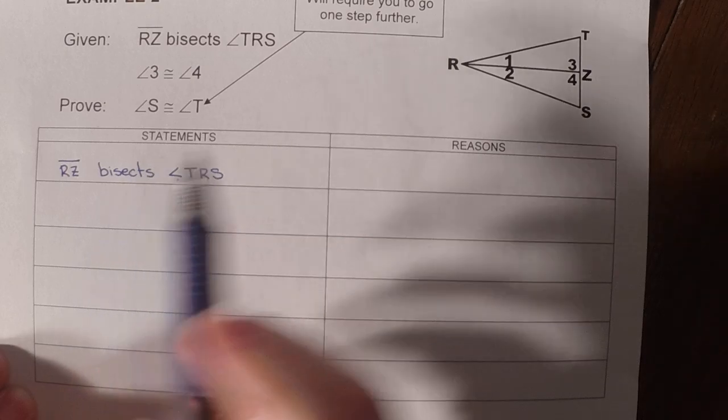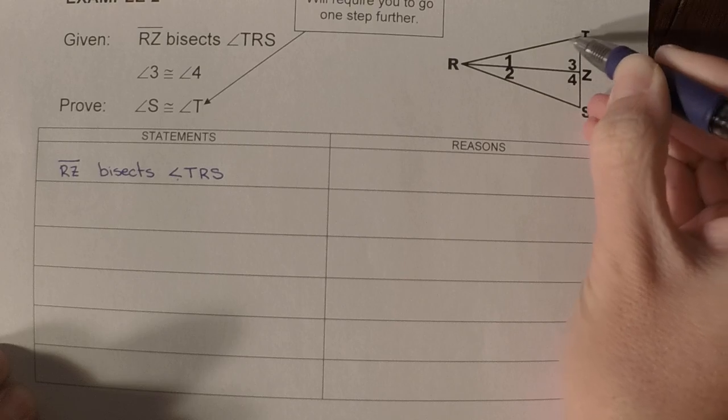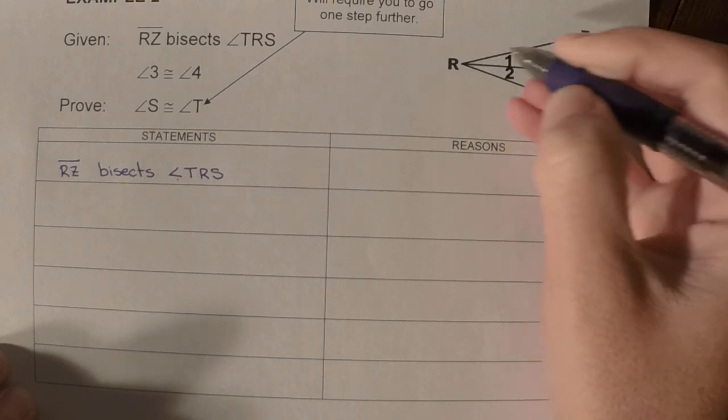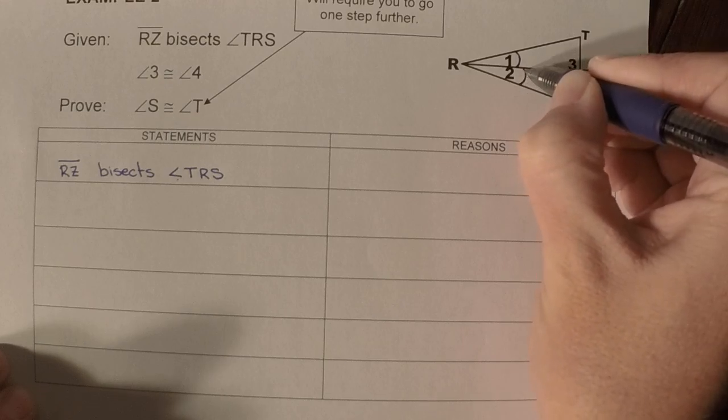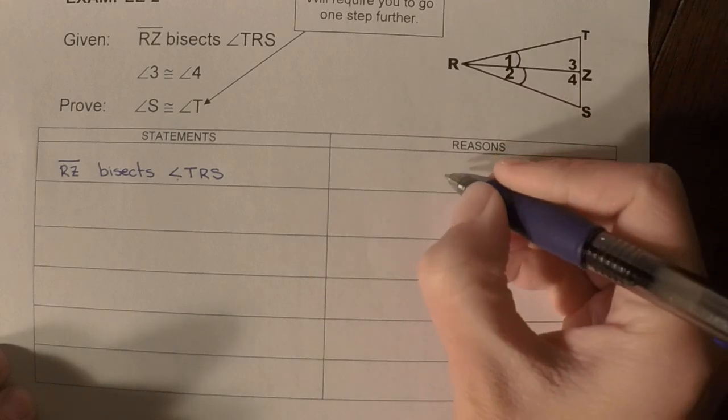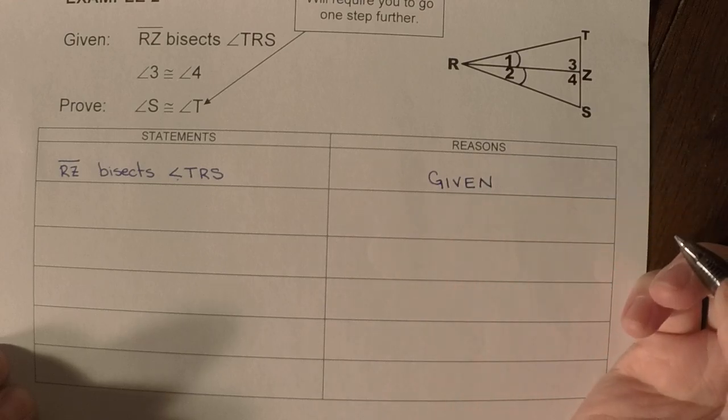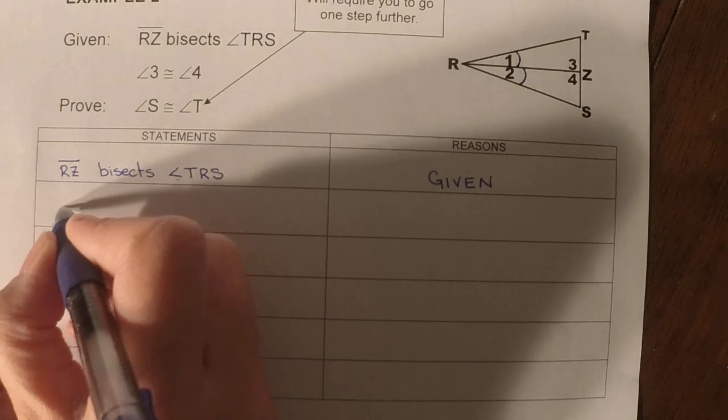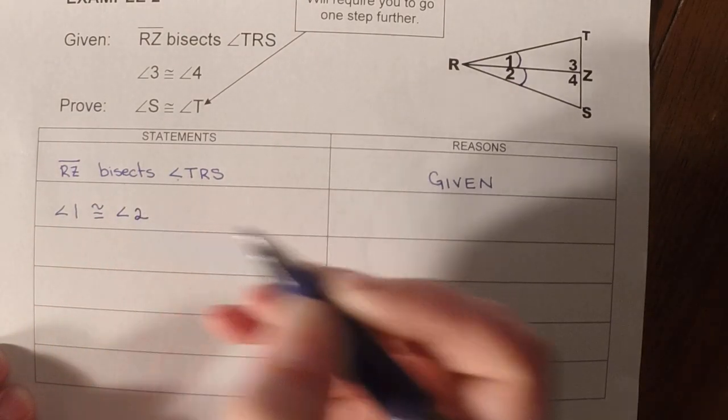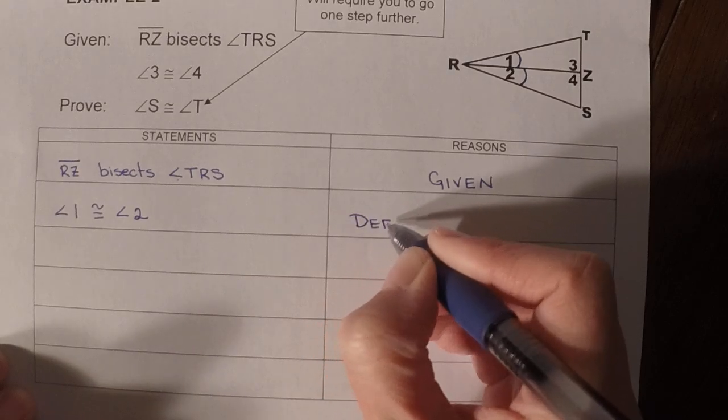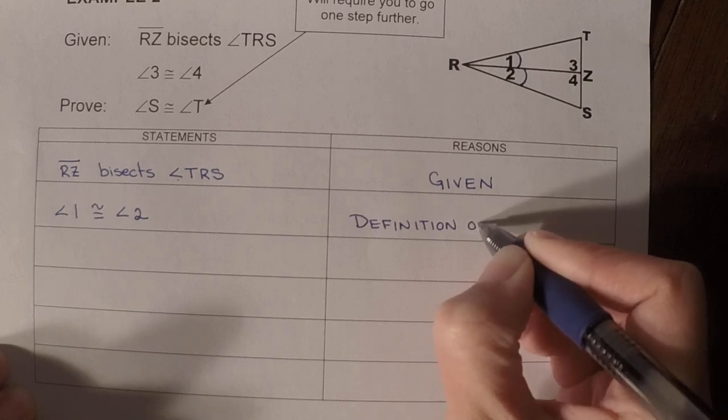So we would say RZ bisects angle TRS. So that means RZ is an angle bisector. Remember, bisect means to cut in half. So RZ is cutting TRS in half. So we should know that angle one is congruent to angle two. And this is given, and then this is our definition of angle bisector.